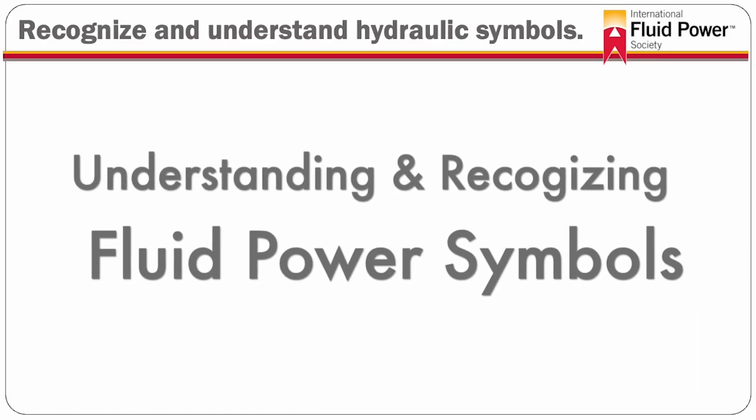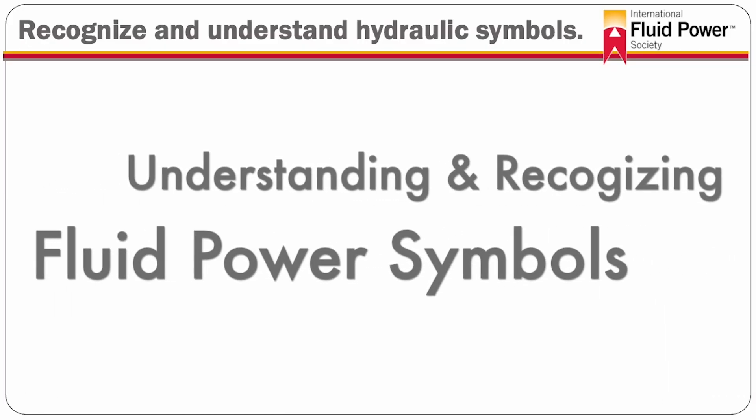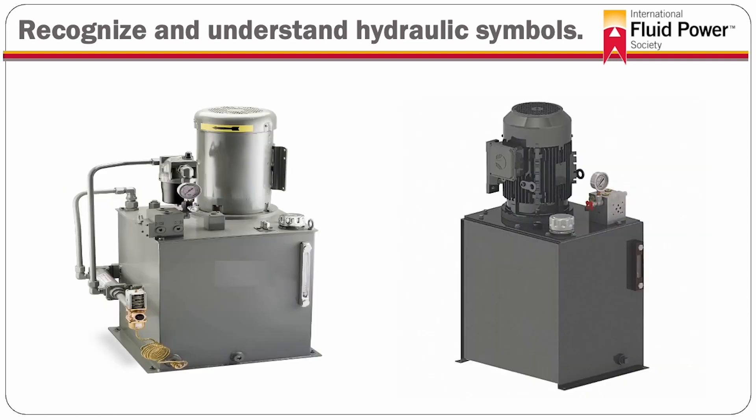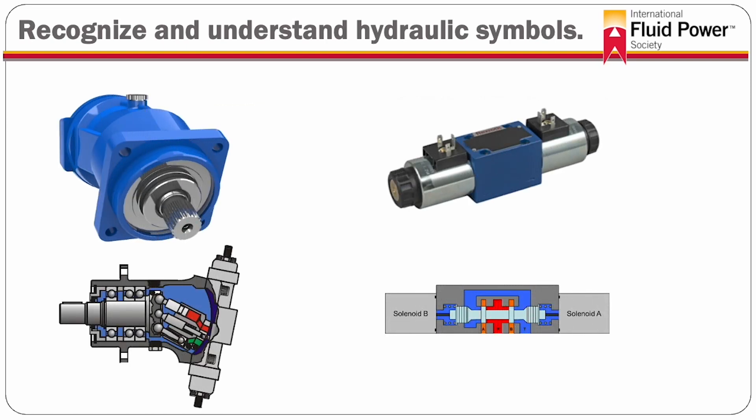There are several ways of depicting fluid power systems. A picture of any component will help locate it in a system. The picture of a power unit can be helpful in recognizing the orientation of the various components. A cutaway image can be useful when explaining the function of a component.